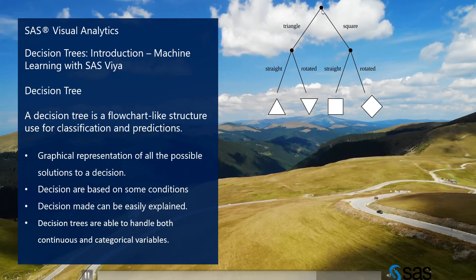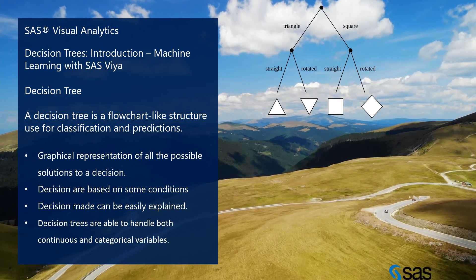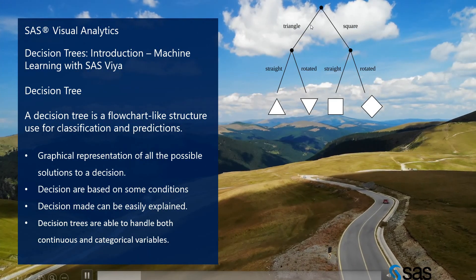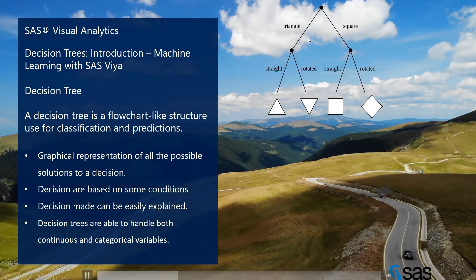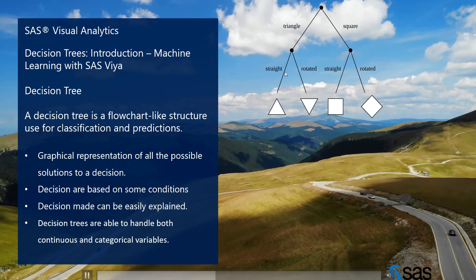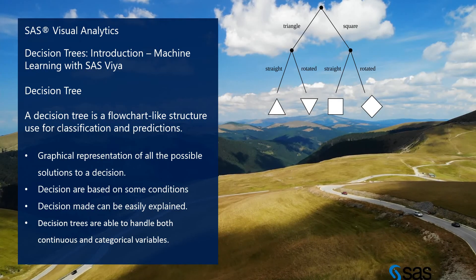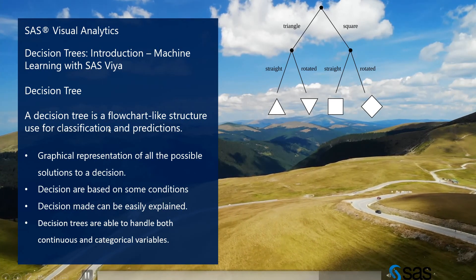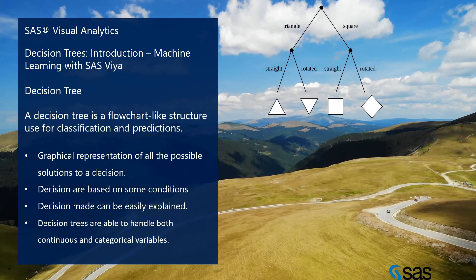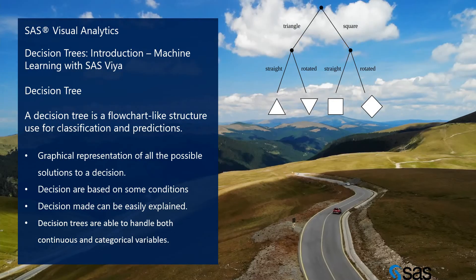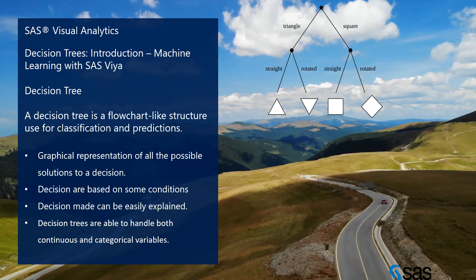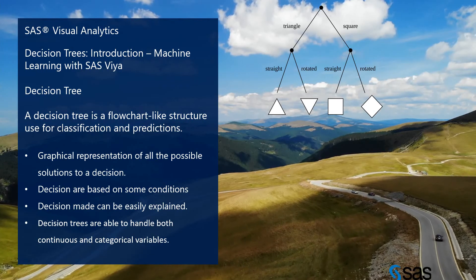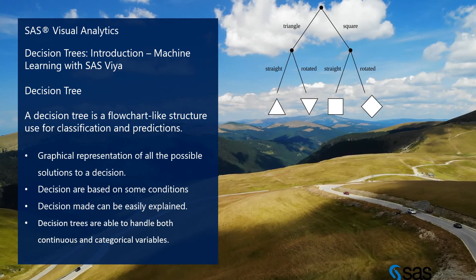This is the parent node. From the root node, if I receive triangle data it will automatically go into the triangle branch — whether straight or rotated — and flow into different parts accordingly. A decision tree is a graphical representation of all possible solutions. Decisions are based on conditions, can be easily explained, and decision trees are able to handle both continuous and categorical variables.